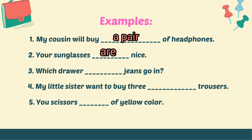Which drawer do jeans go in? In this example, we fill in the blank with either 'do' or 'does.' Does cannot come here because we always use 'does' with singular nouns. Here we are talking about jeans, which is a plural form, so we put 'do.' Do is always used with plural nouns. Which drawer do jeans go in? Next: My little sister wants to buy three — pairs of — trousers. So three trousers means we use 'pairs of.' My little sister wants to buy three pairs of trousers.